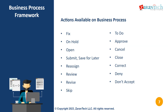Some common actions available on Workday business processes include: fix, put on hold, open, submit, save for later, reassign, review, revise, skip, to do, approve, cancel, close, correct, deny, and don't accept. These provide flexibility in how steps can be handled as a process moves through its workflow.